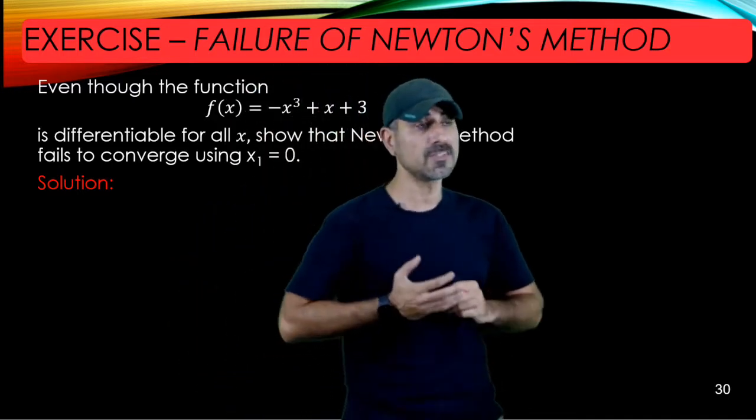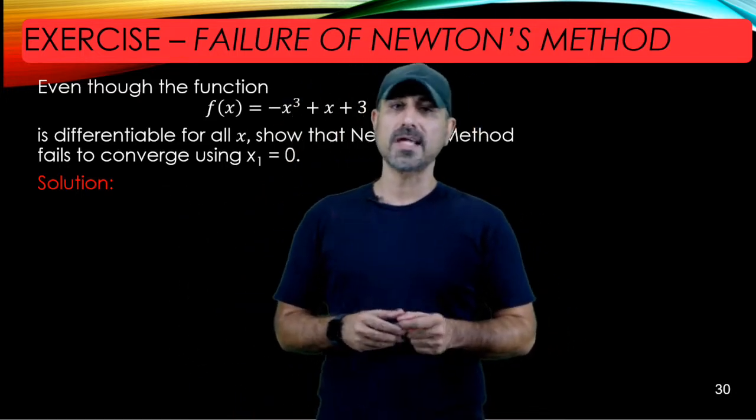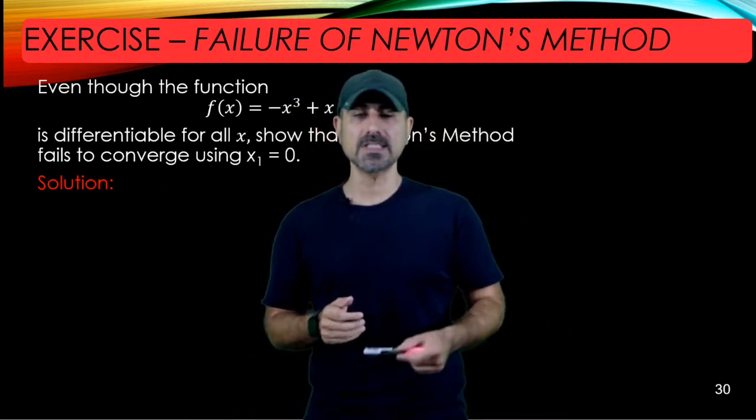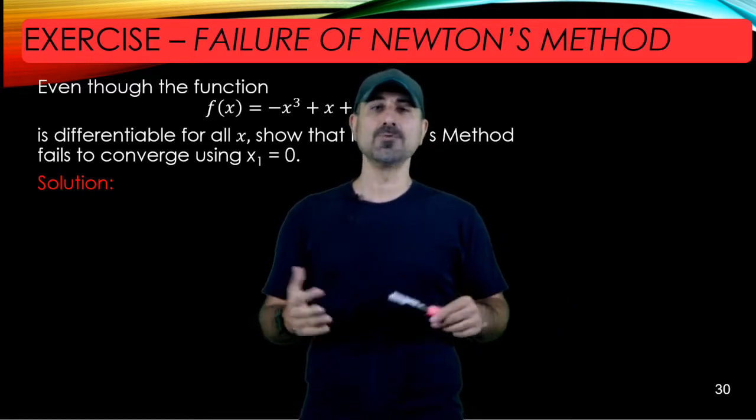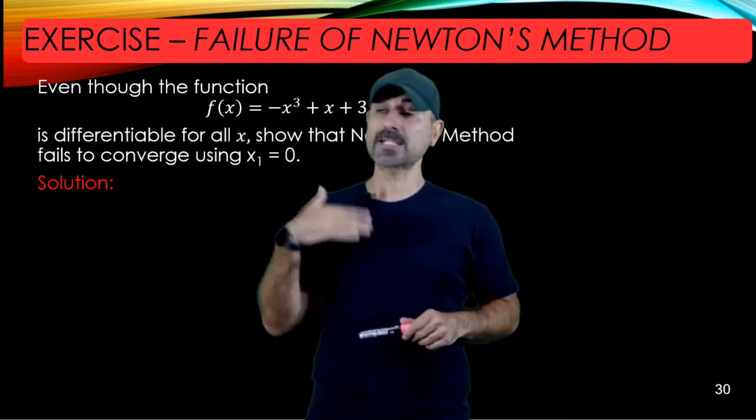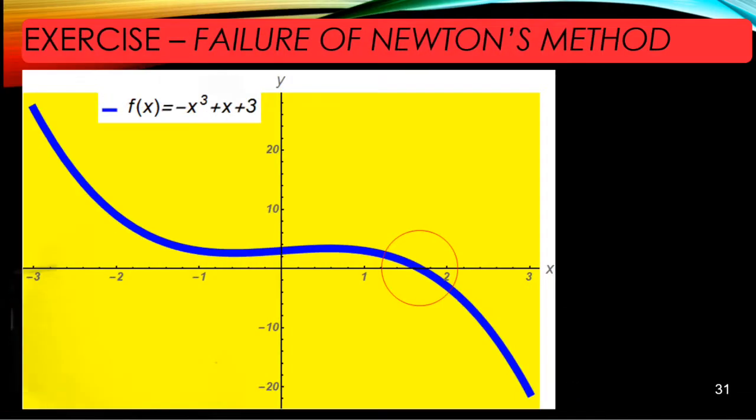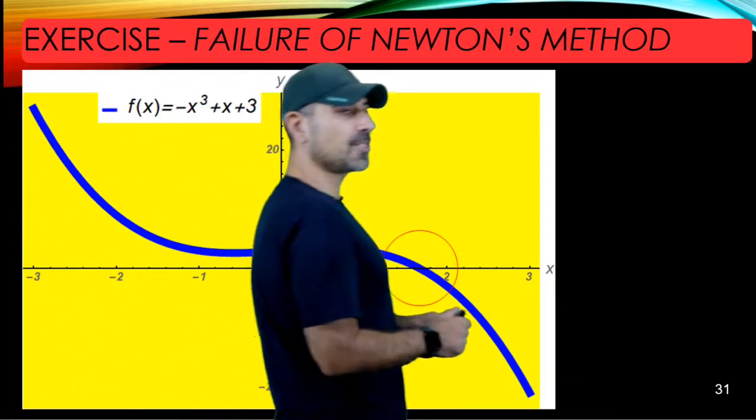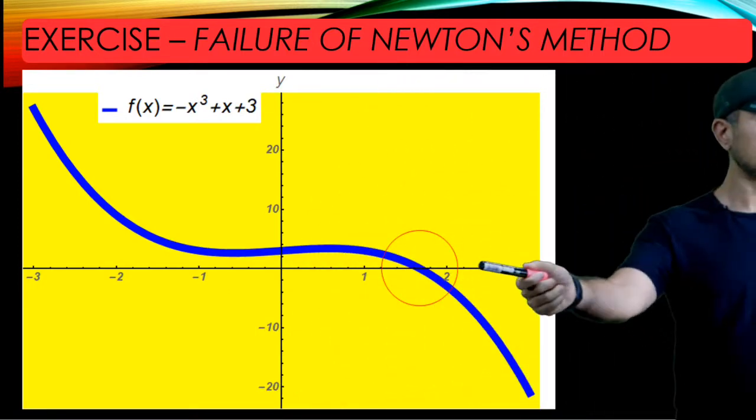We will show that Newton's method fails to apply for this problem because every time you iterate the scheme, you get farther and farther away from the actual root or zero of this cubic function.